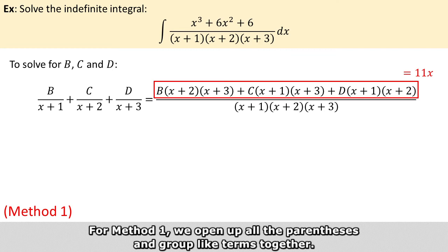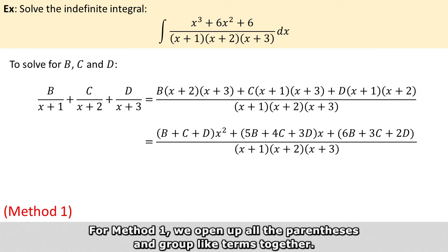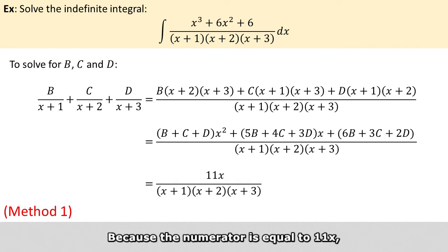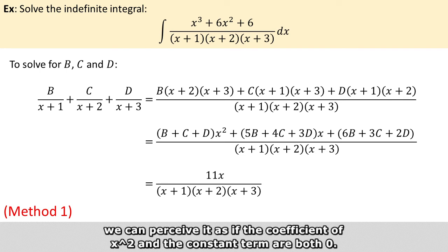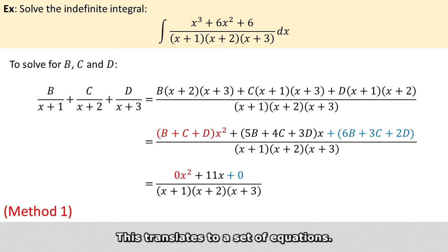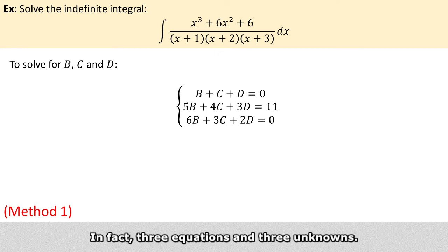For method 1, we open up all the parentheses and group the like terms together. This forms a quadratic expression in the numerator. Because the numerator is equal to 11x, we can perceive it as if the coefficient of x squared and the constant terms are both 0. So this translates to a set of equations. In fact, three equations and three unknowns.